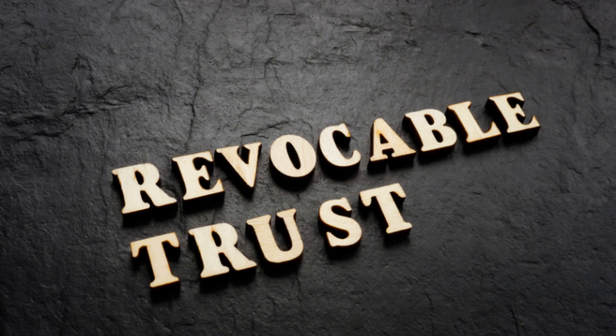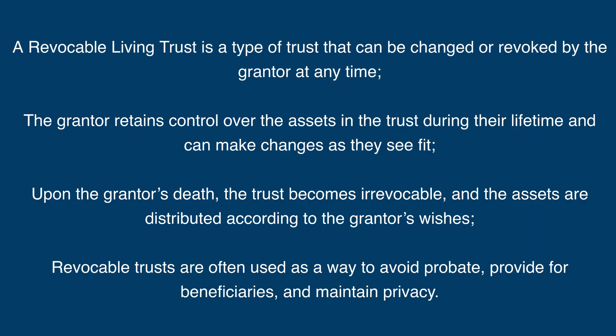A revocable living trust is a type of trust that can be changed or revoked by the grantor at any time. The grantor retains control over the assets in the trust during their lifetime and can make changes as they see fit. Upon the grantor's death, the trust becomes irrevocable, and the assets are distributed according to the grantor's wishes. Revocable trusts are often used as a way to avoid probate, provide for beneficiaries, and maintain privacy.